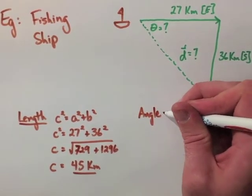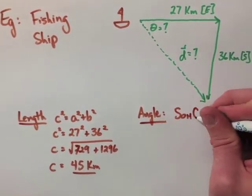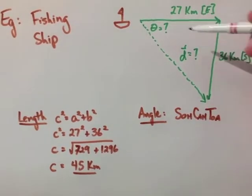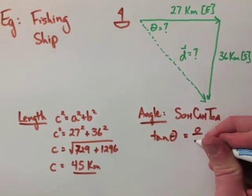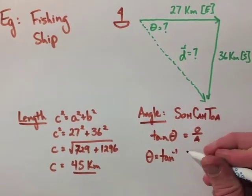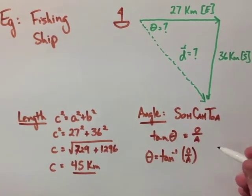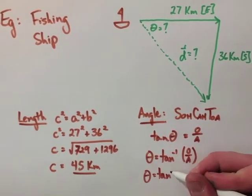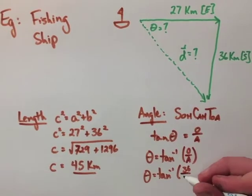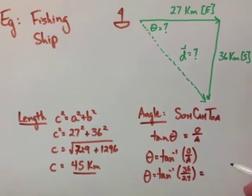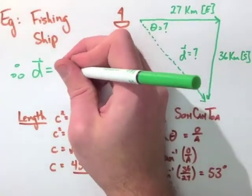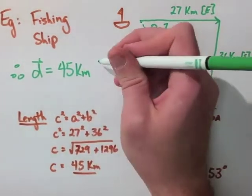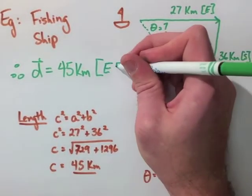Then we're going to use SOHCAHTOA to find our angle, because we again have a right angle triangle. Looking at a triangle, we have our opposite and our adjacent, so we can use tan theta equals O over A, and theta equals the tan inverse of O over A. We can sub in our values then, to find out that theta is actually equal to 53 degrees. Now this allows us to state that our final displacement is going to be 45 kilometers east, and then down 53 degrees south.